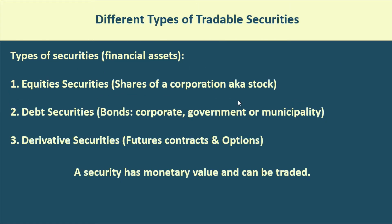There are three main types of securities. The first is an equity security, which most of you have heard of. An equity security simply means shares of a corporation — also known as stocks. So the first major security, or financial asset, is an equity security, also known as shares in a corporation or stock.